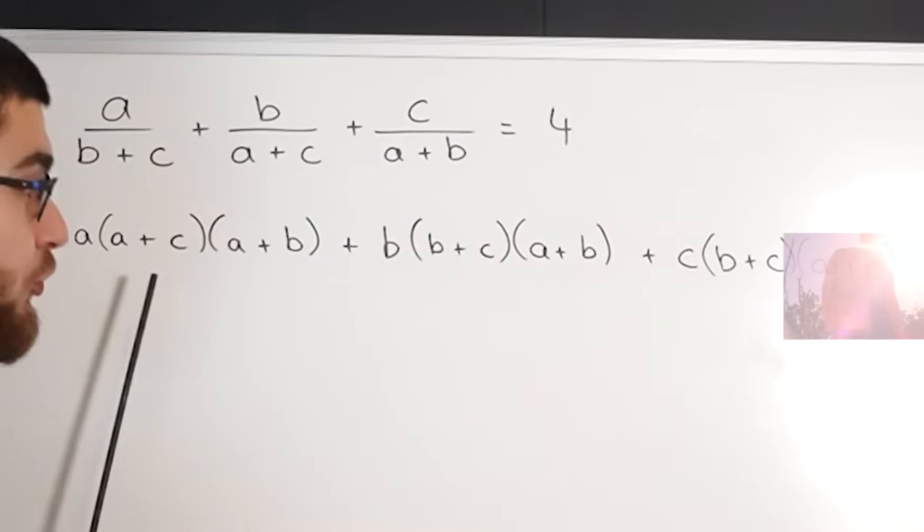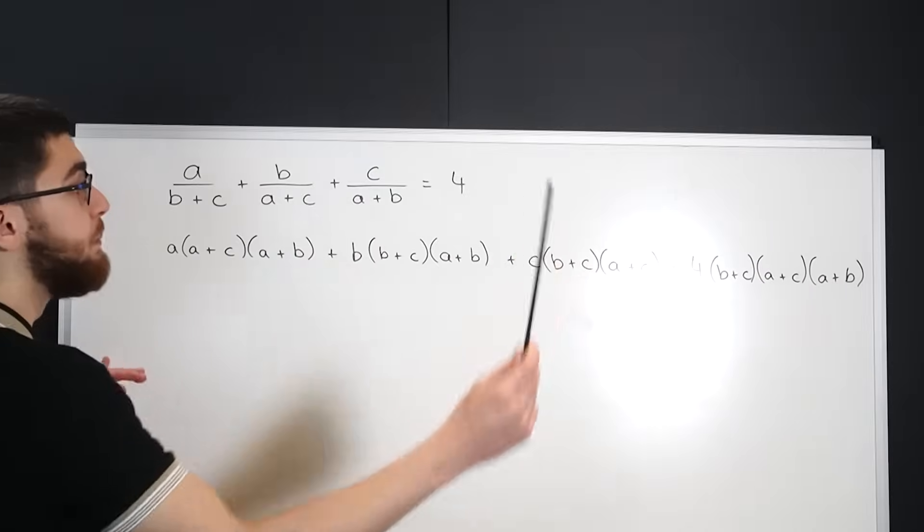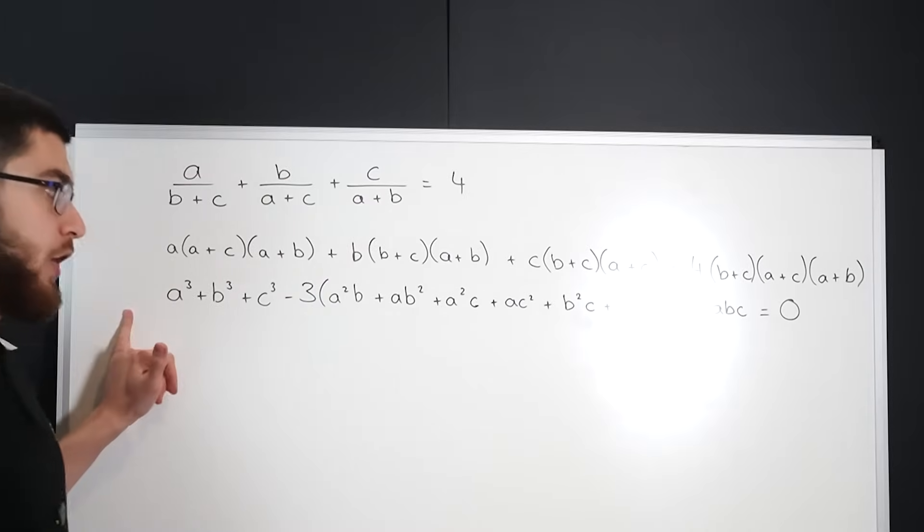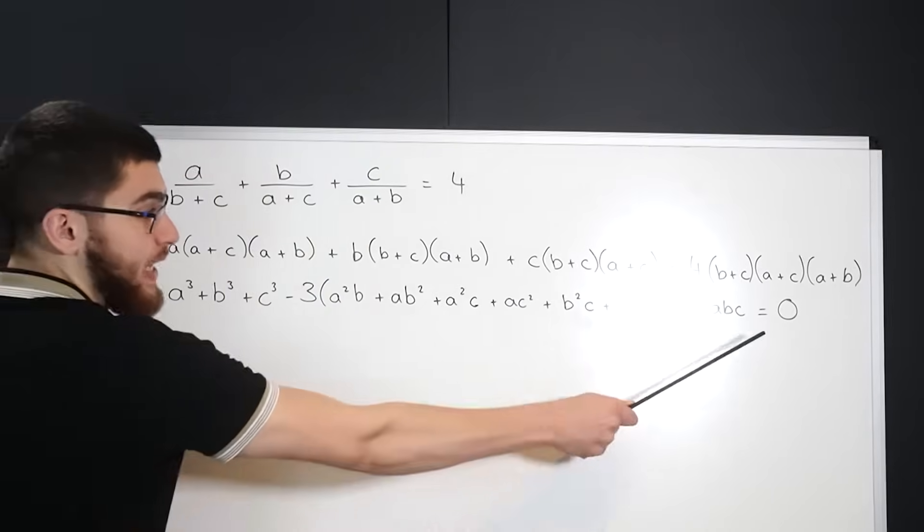Now that we've got them in letters, we can multiply out the denominators by multiplying both sides by B plus C, A plus C, and A plus B. Now that we've multiplied it all out, I'm going to clean it up a little bit by expanding the brackets and making it equal to 0.